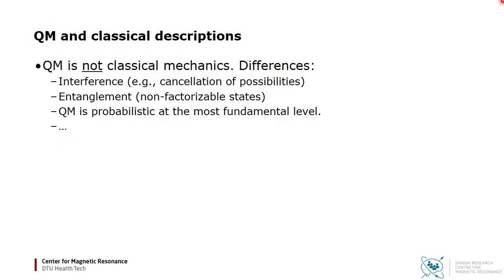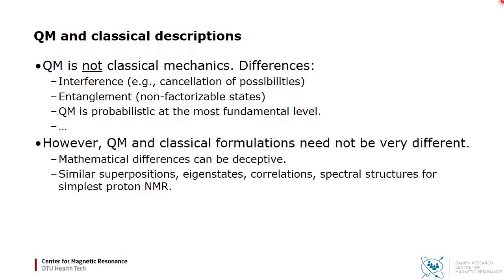In particular, interference involving cancellation of possibilities, entanglement, which are non-factorizable states, and quantum mechanics is probabilistic at the most fundamental level. However, the two descriptions can be made quite similar. In particular, superpositions and eigenstates are common concepts, for example.